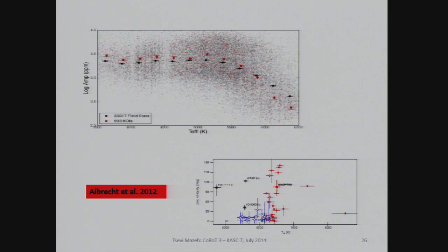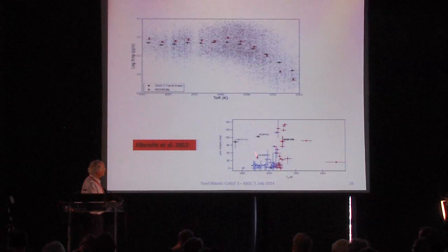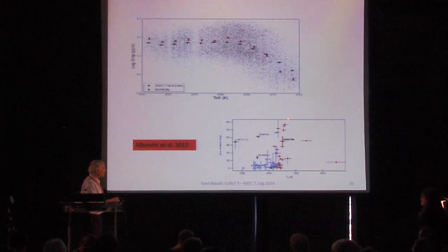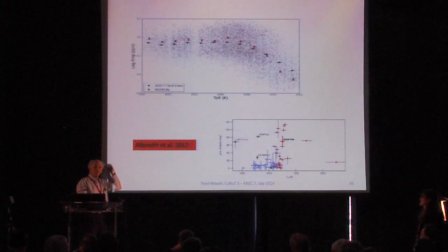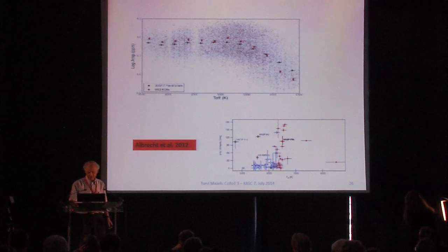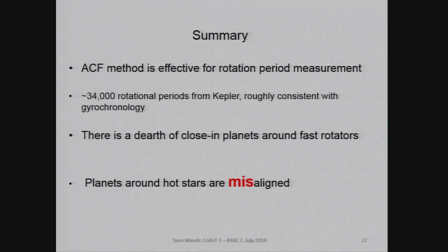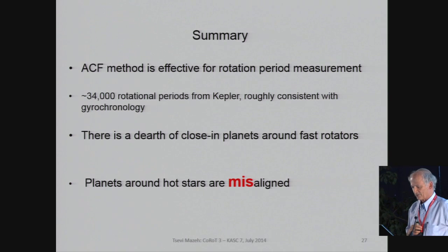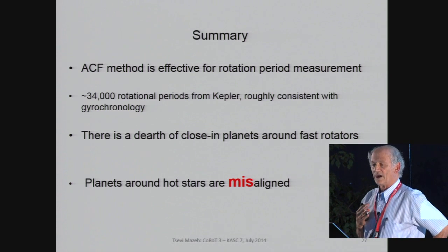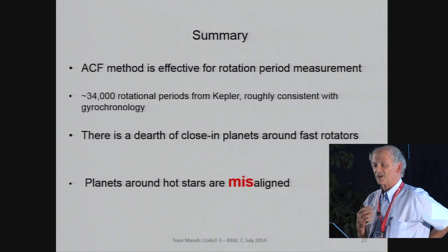This reminds us of a plot we have seen quite a few times at this conference: when we move to hot stars, we get obliquity all over. We suggest that the transition happens at around 6,000 K. To summarize: we did autocorrelation analysis of all the Kepler stars, we find a paucity of close-in planets around fast rotators, and we found evidence that hot stars with planets are misaligned. Thank you very much.